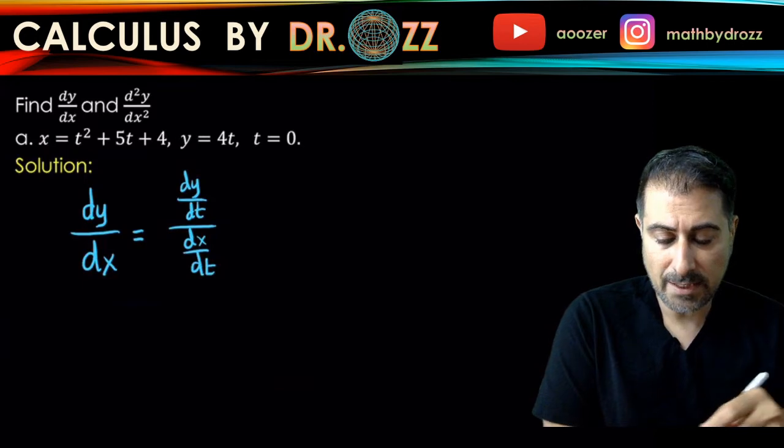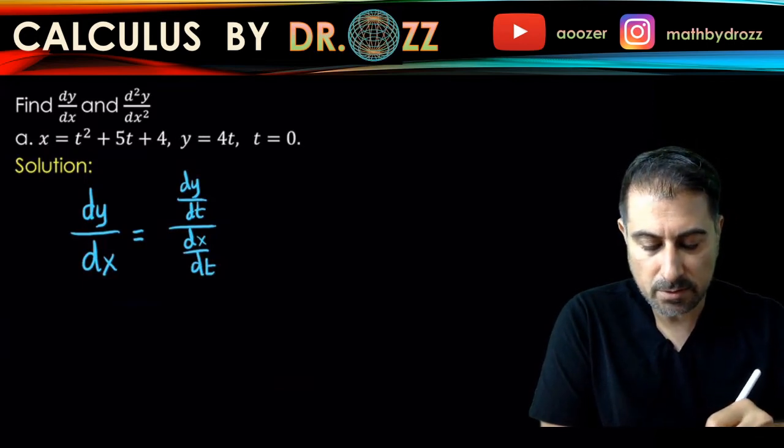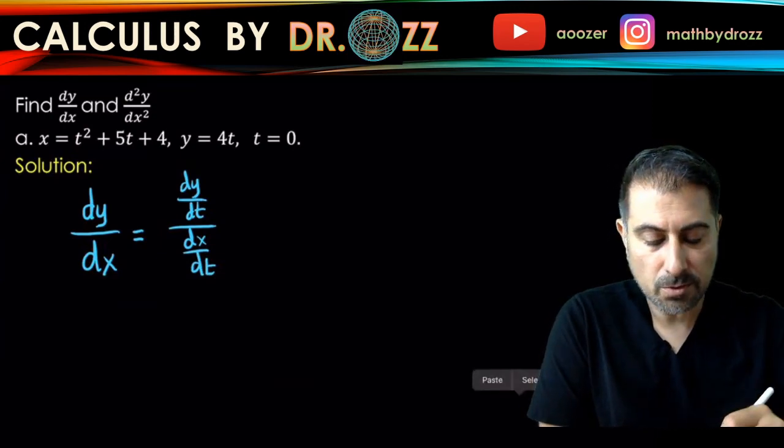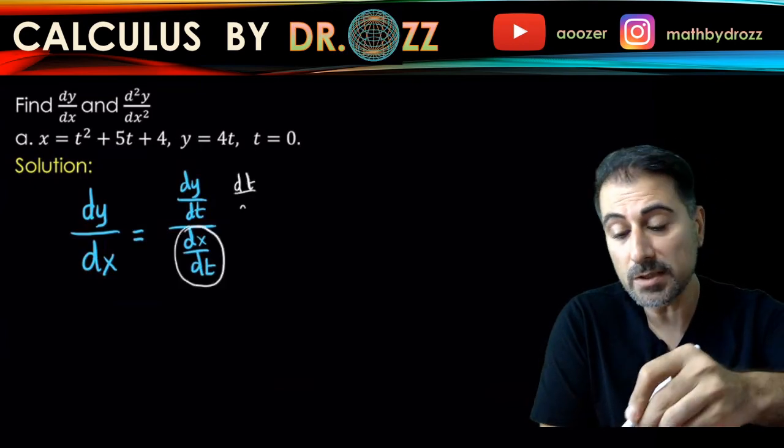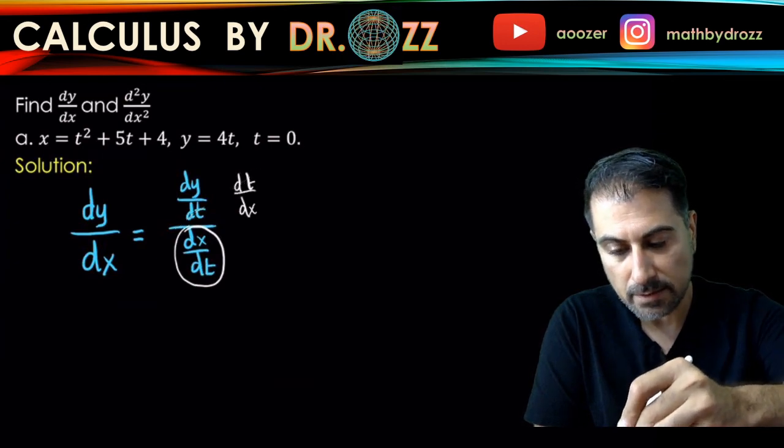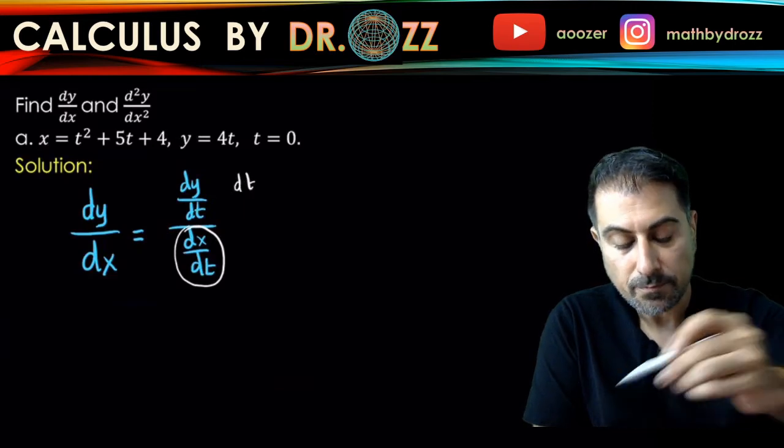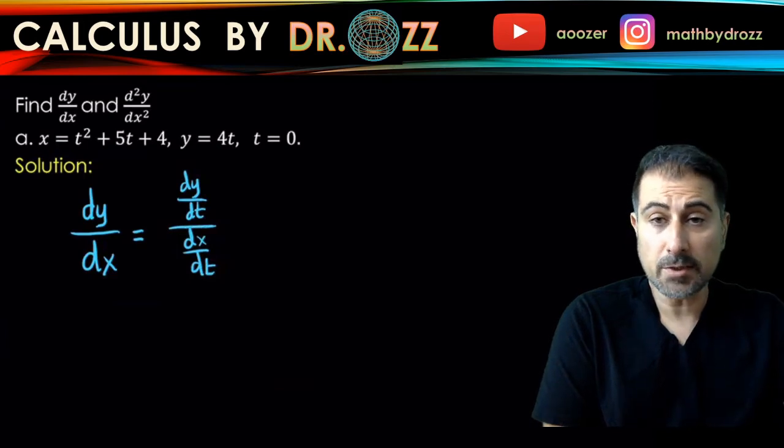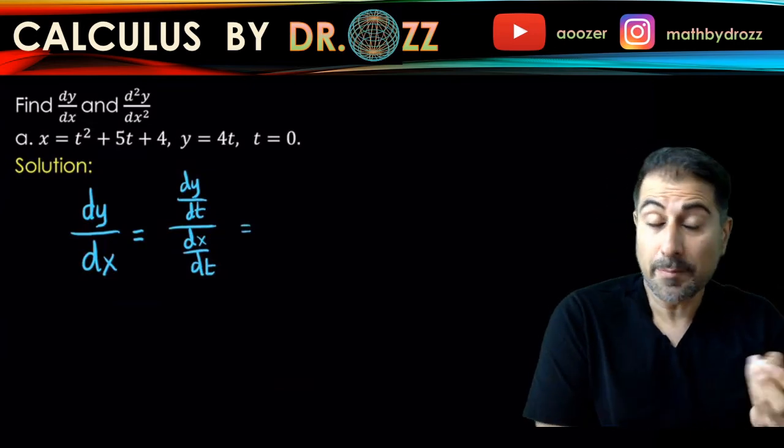So dy over dx can be written as dy over dt divided by dx over dt, because we don't really have the y equals f of x representation of the function. So we have to rely on the derivatives of x and y with respect to t, the parameter. And this is a nice formula, in fact, because when you flip this over, just for your reference, if you flip this over, this is dt over dx. And when you cancel the dt's, this is still dy over dx. So this formula comes out of dividing the top and the bottom by dt essentially.